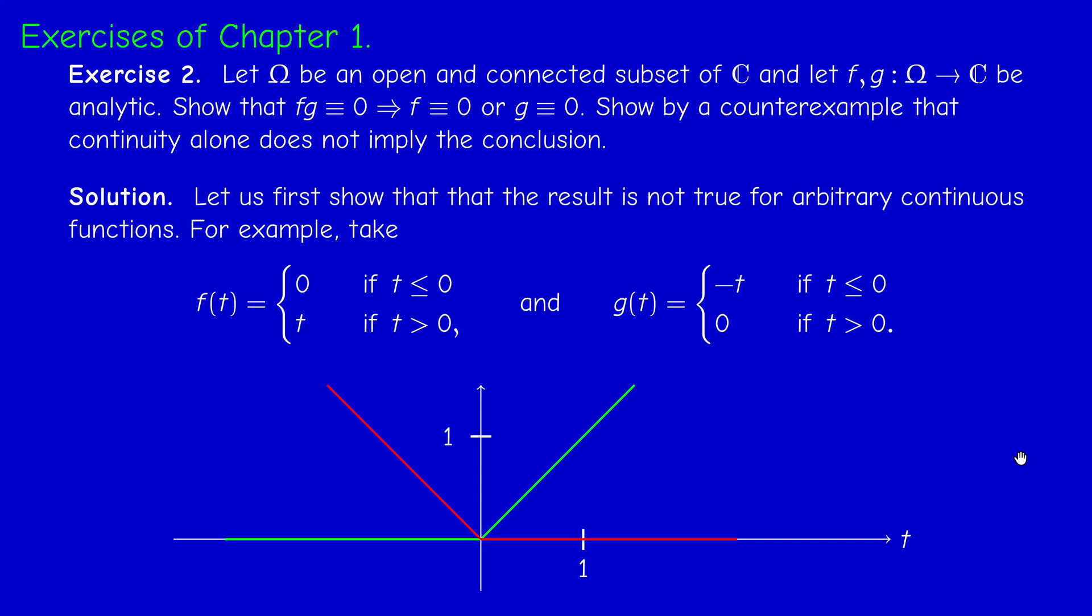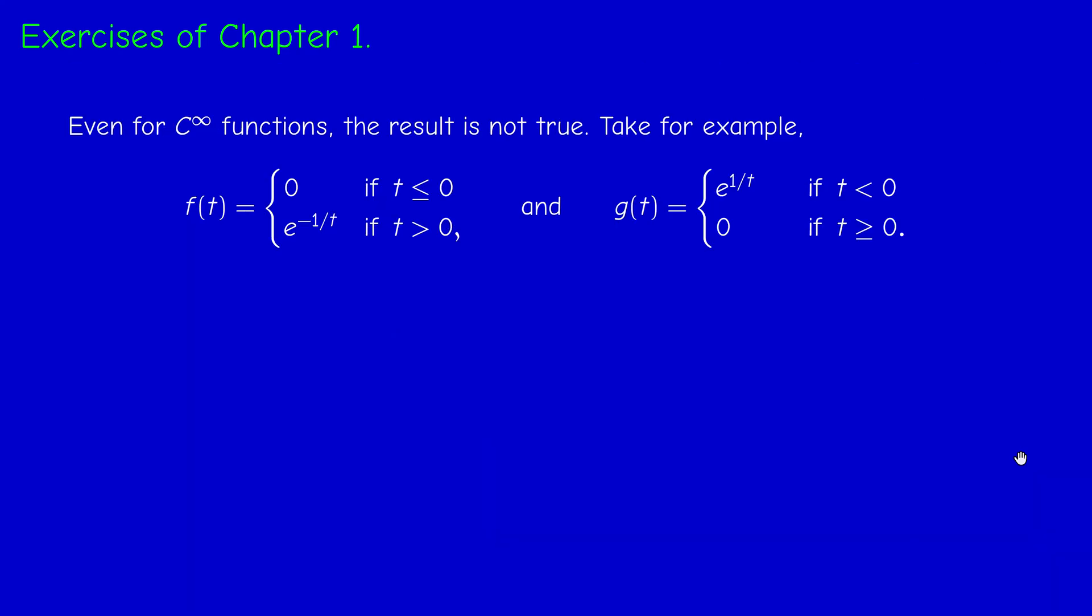And we can, of course, take C infinity. Even if the functions are assumed to be C infinity, the result is wrong. So remember, consider this function which is zero if t is negative or zero, and e to the minus 1 over t if t is positive. We already encountered this in a previous video.